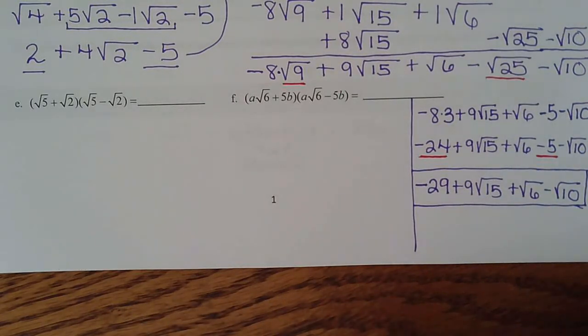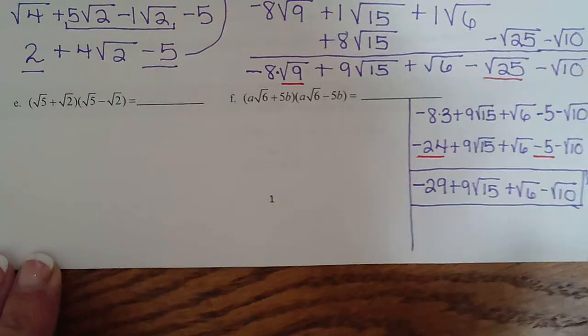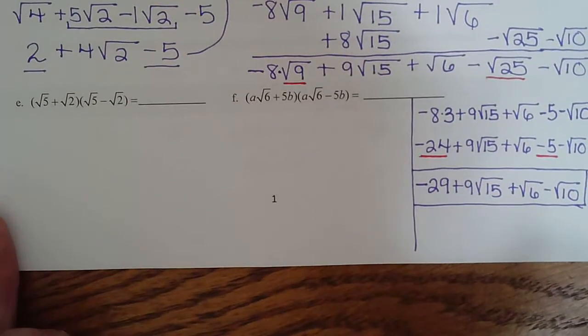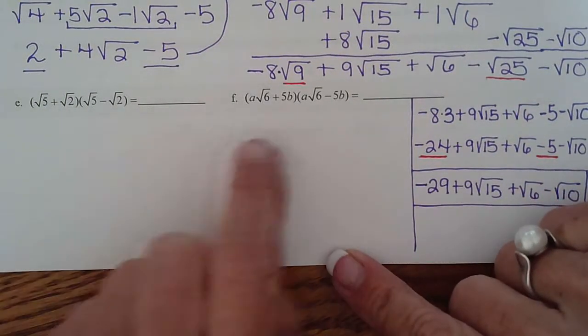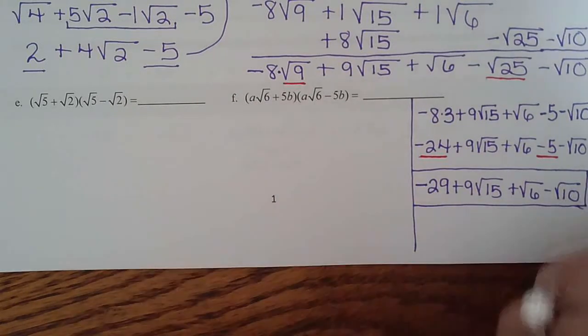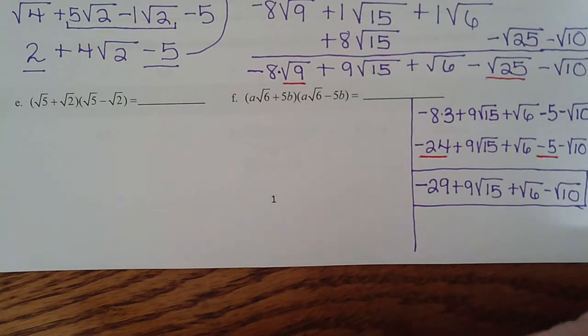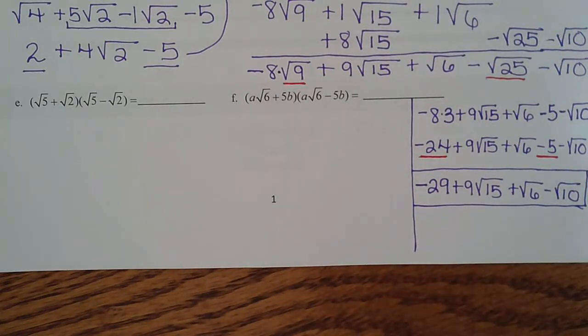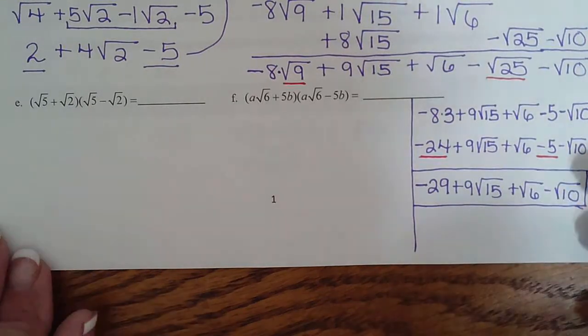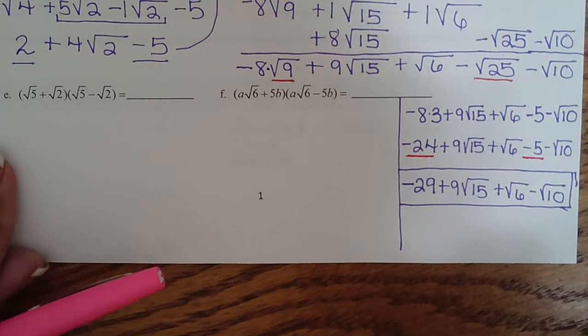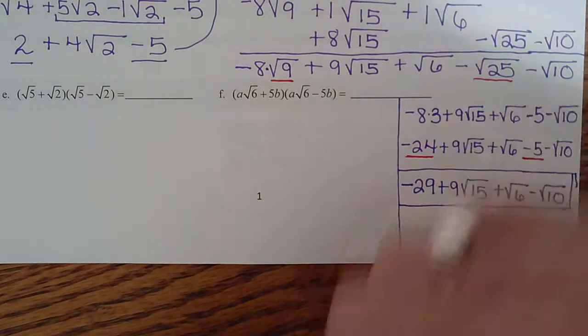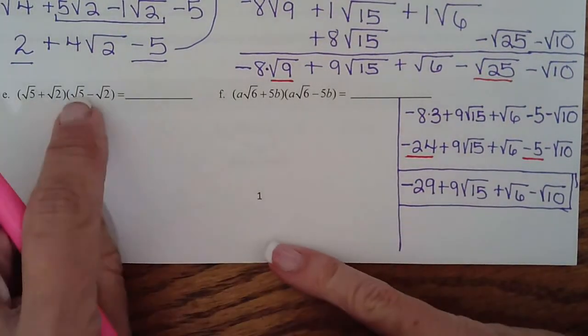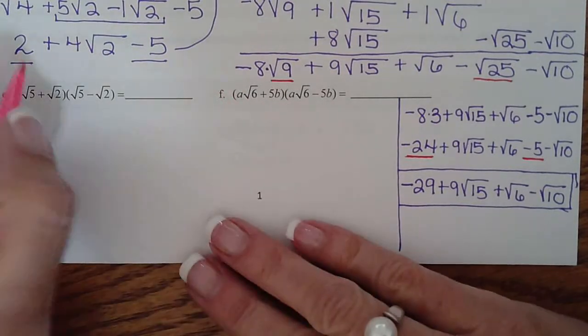Let's take a look at these next two problems. As you might notice, they are both FOIL problems, and they are also both conjugates. Radical 5 plus radical 2, radical 5 minus radical 2. This plus 5b, this minus 5b. You may remember back in chapter 4, we learned that whenever you multiply conjugates, the middle terms will cancel. So I like to keep that in mind as I'm working these. Let's start - they are both FOIL because they are two terms by two terms.